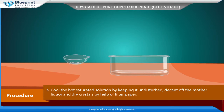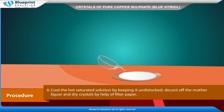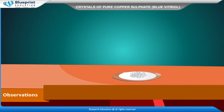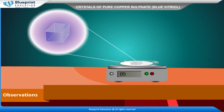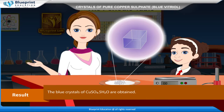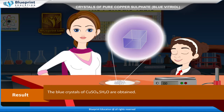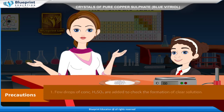Decant off the mother liquor and dry the crystals with the help of filter paper. Observations: Shape of crystals — Triclinic. Color of crystals — Blue. Weight of crystals obtained — X grams. Result: The blue crystals of copper sulfate CuSO4·5H2O are obtained.